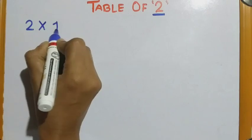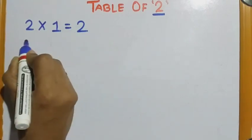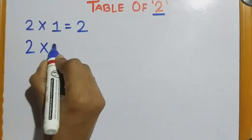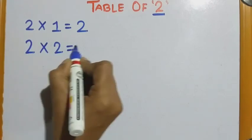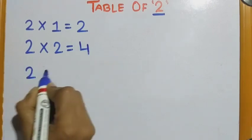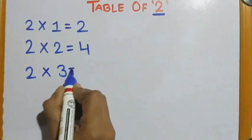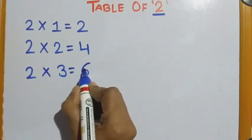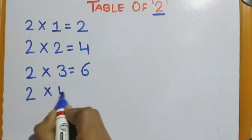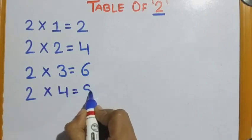Two ones are two. Two twos are four. Two threes are six. Two fours are eight.